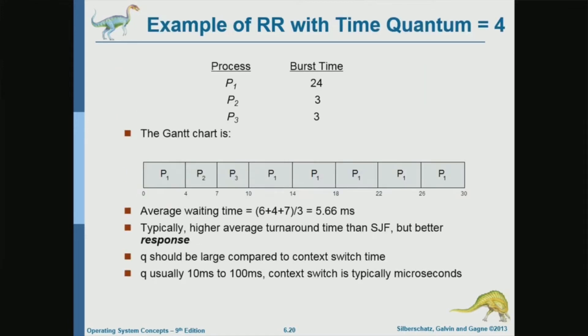So here's an example. I have processes P1, P2, P3. I'm not showing arrival times, which means that I'm ignoring the differences in arrival time and I'm assuming that all of them arrive at time zero, which is an idealization. And these are the CPU bursts. So P1 is going to get four. So the system is going to give four. We're assuming that the time quantum is four. So we're giving four to P1.